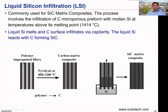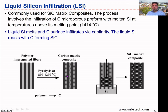We can use polymer-impregnated fibers as a starting fiber preform, and then achieve the pyrolysis process at between 800 to 1200 degrees. This allows us to produce the carbon matrix composite. The idea is that carbon should be present to react with the liquid silicon to produce the silicon carbide.